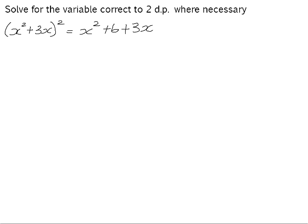Let's consider this example: solve for the variable, correct to two decimal places where necessary. It looks to us as though it is a quadratic equation. We have an x squared and it is currently not in standard form. So your first instinct might be to multiply out and get it into standard form. Let's see what happens if we do that.